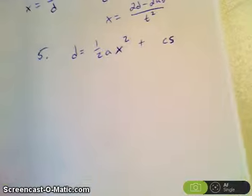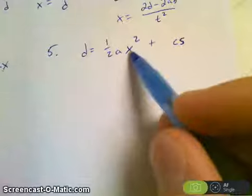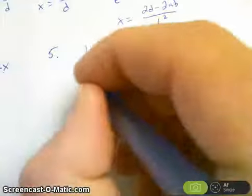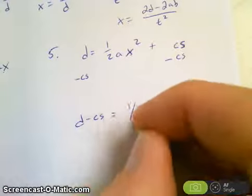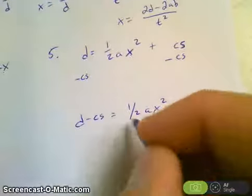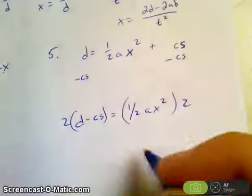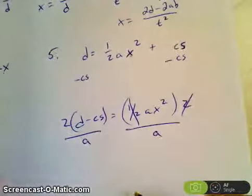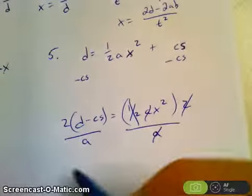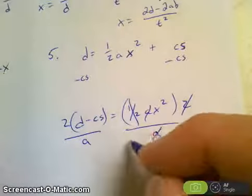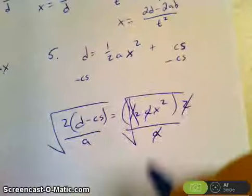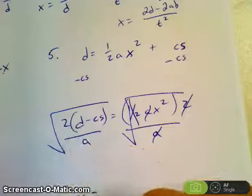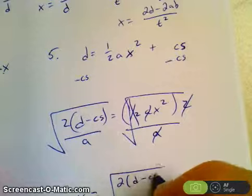And one more. Again, isolating for x. First thing I need to do is move the cs over. So d minus cs is equal to 1 half x squared. Multiply both sides by 2. 2 times 1 half cancels. Divide both sides by a. A's cancel. To get rid of the x squared, we did it on the previous problem. In this case, we're going to take the square root. So all said and done, I have x equal to, and then I look over here. Because again, the square root and that cancel. I get a square root of a quantity 2 times d minus cs all over a.